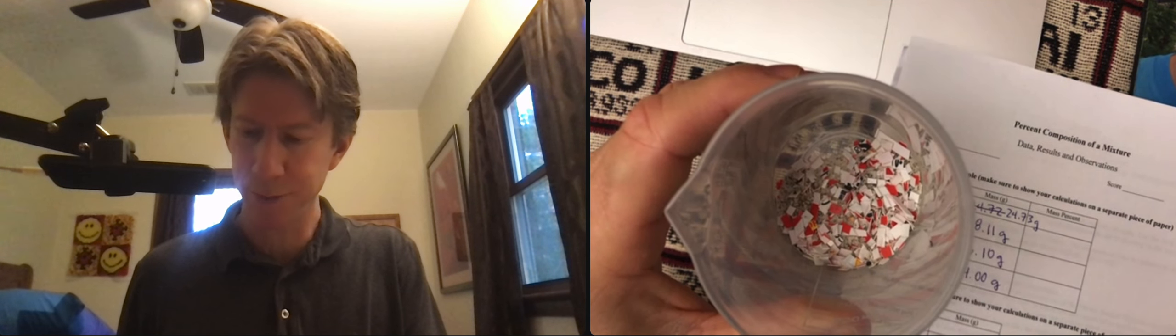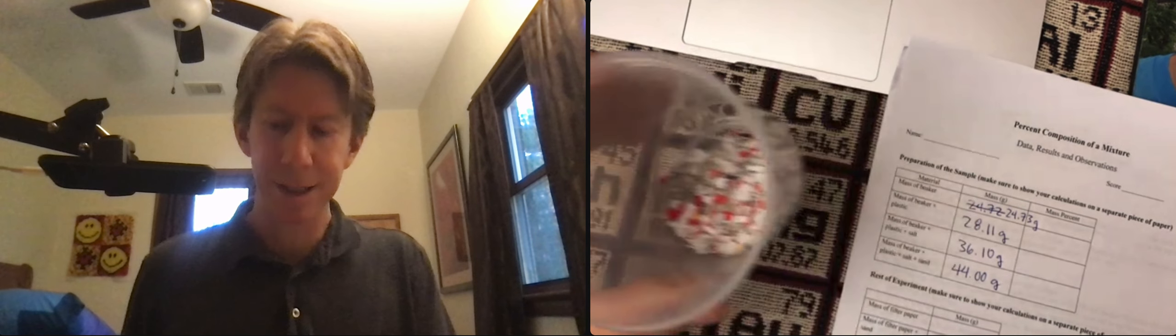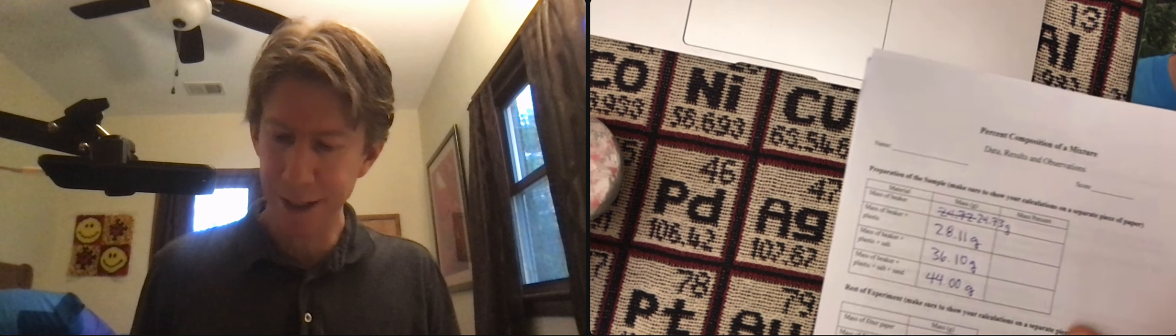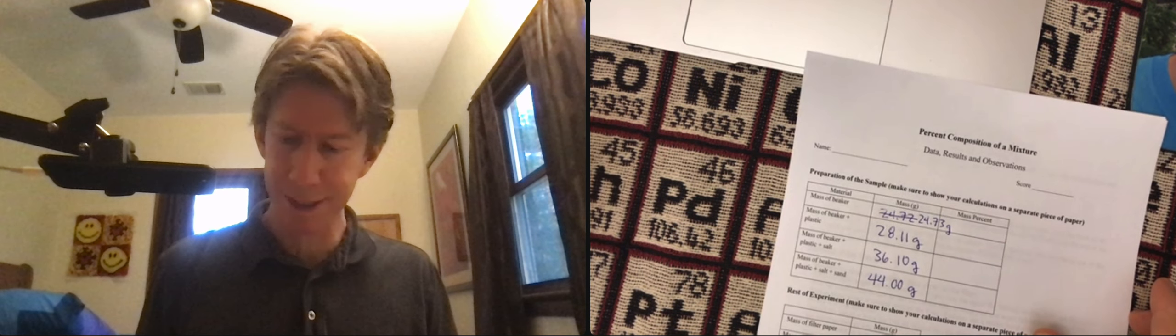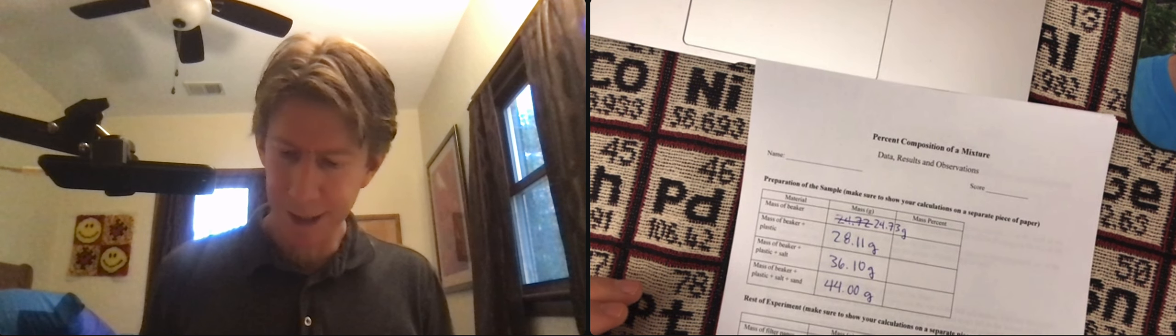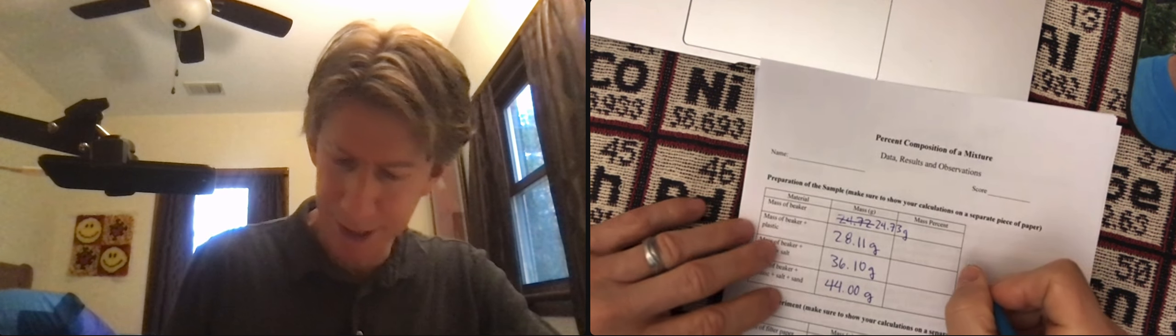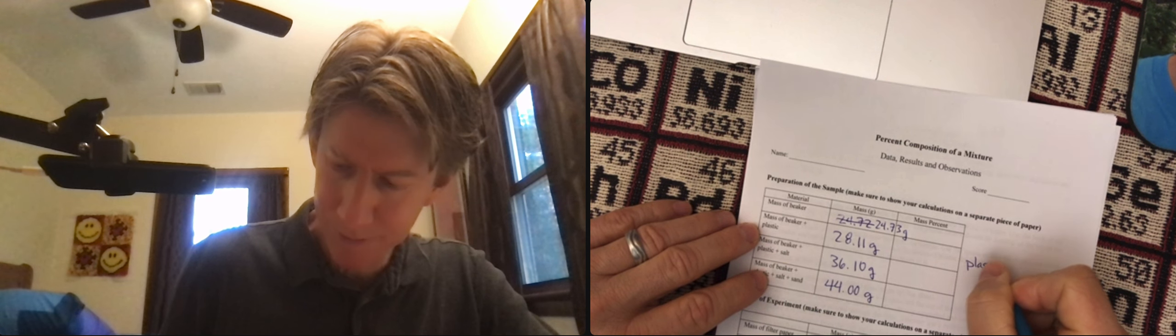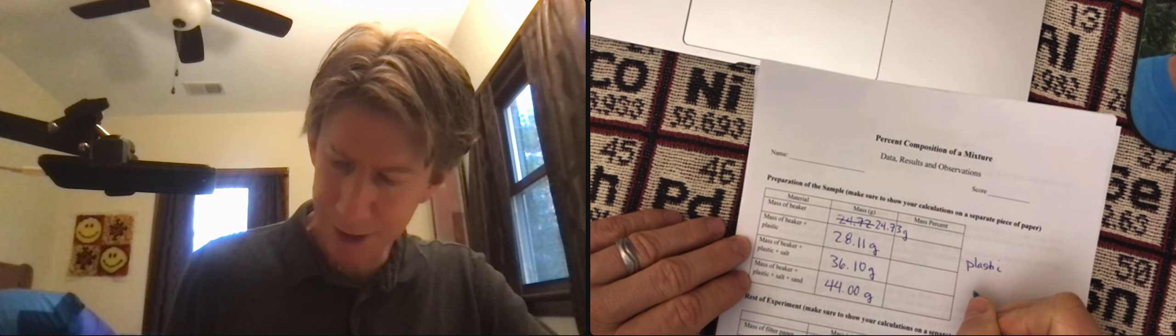And then you're going to snap a picture of that as your first picture. And let's go ahead and do the mass percents. This is going to be the mass percent of plastic, mass percent of salt, and mass percent of sand.